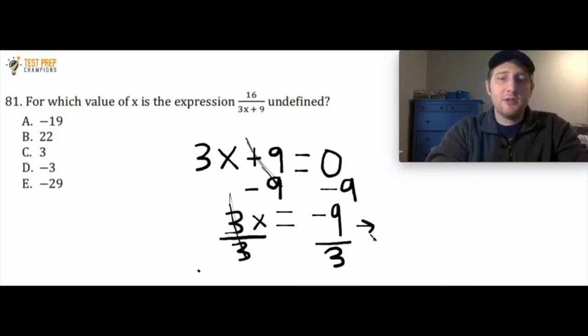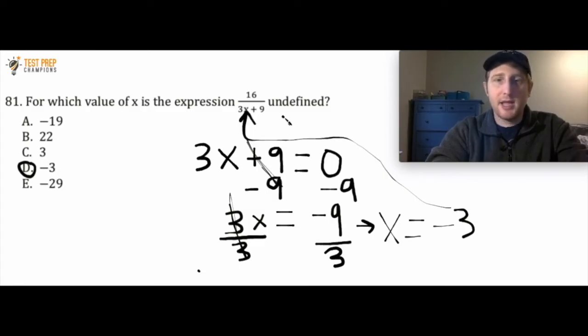Now if I do this I'll figure out that x equals negative 3. So d is the right answer here and the reason that this is correct is if I take this negative 3 and if I plug this into the equation, if I plug this in for x I'm going to get it as a 0 in my denominator.